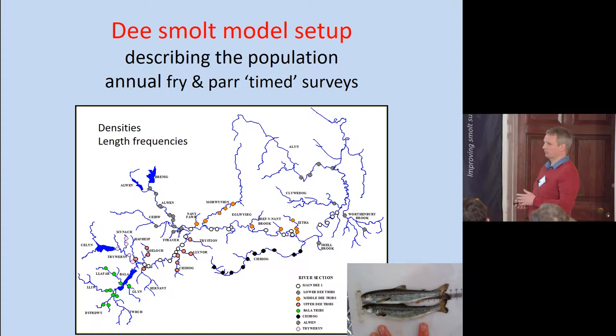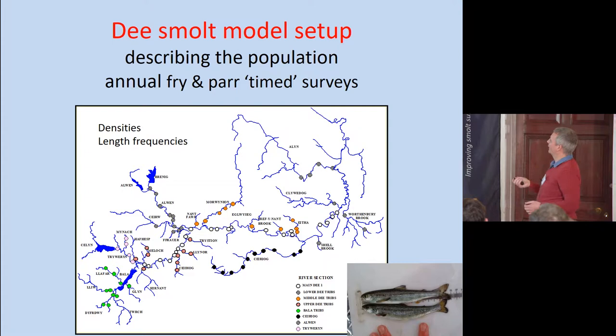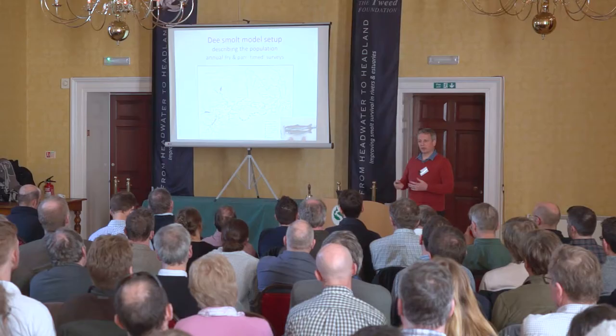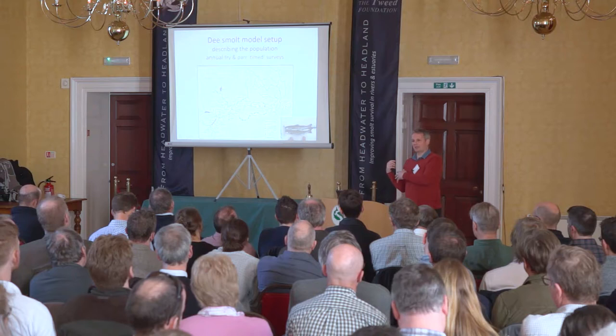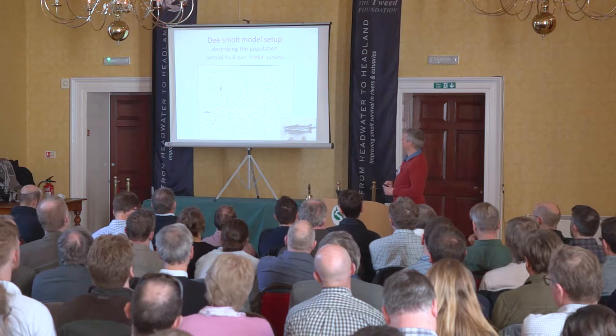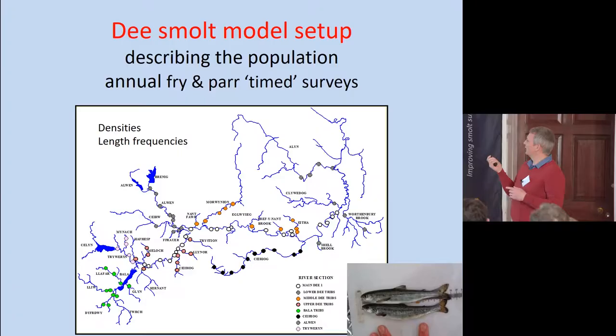These are electrofishing surveys in the tributaries and in the main river of the Dee, from annual fry and parr timed surveys. We're using the timed survey data because they have lengths of the catches, and we need that to work out the length frequency distribution of the catches. They're raised by the electrofishing efficiencies, so we've applied that as well.